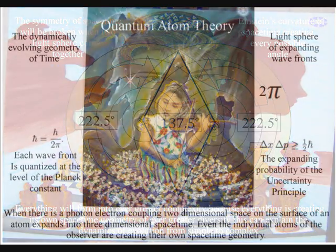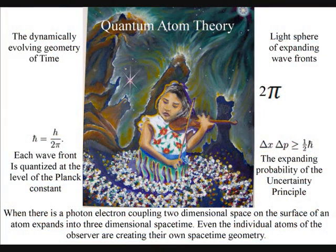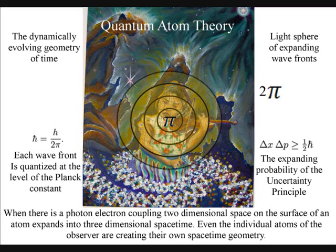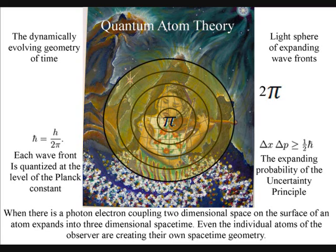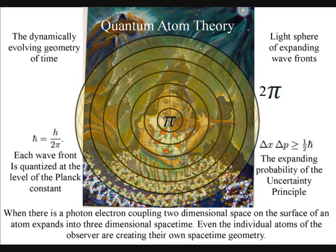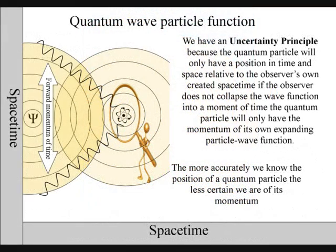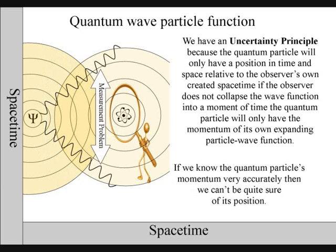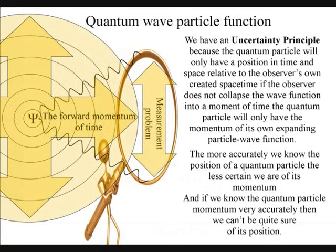The geometry of space-time is an innate property of matter, whatever form or shape it takes. Each photon-electron coupling will create its own symmetry around its point in space-time. This can be observed either as a point in space over a period of time, or as an area of space at a moment in time. But not as both, therefore we have the measurement problem of quantum mechanics.